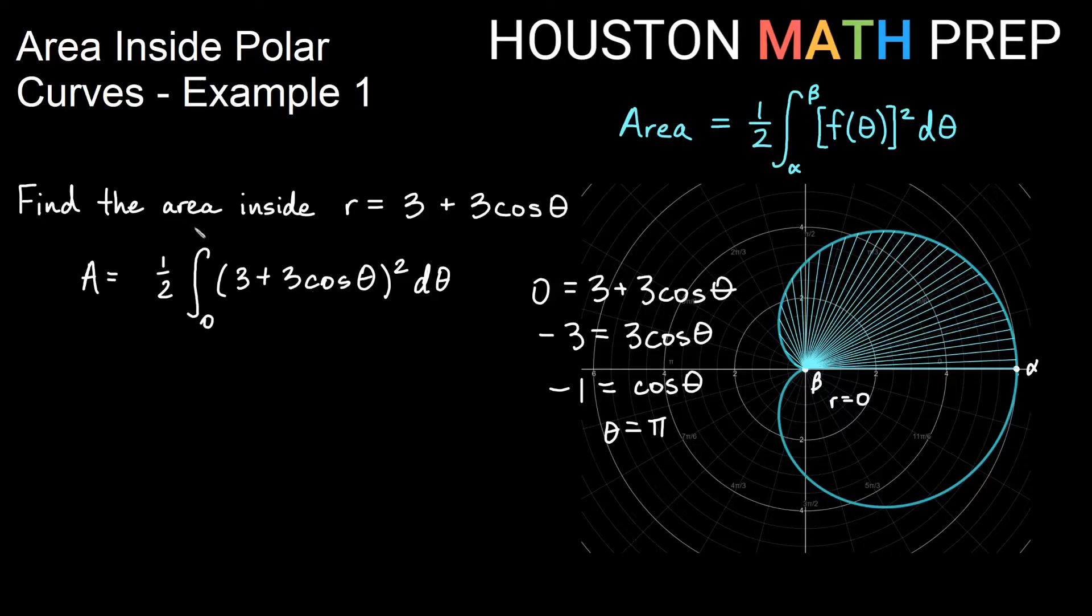That tells us that our beta is pi. We'll be integrating from zero to pi. And now that will give me just the upper half here. Remember, I want to multiply by 2 to also get the area of the lower half.